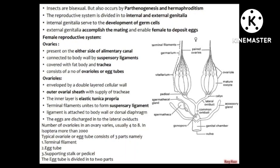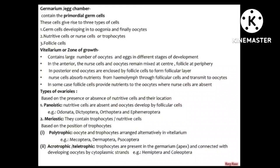The eggs are discharged into the lateral oviduct. The number of ovules in an ovary varies — usually 4 to 28, but in Isoptera more than 2000. A typical ovule or egg tube consists of three parts: first is the terminal filament, second is the egg tube, and third is the supporting stock or pedicel. The egg tube is divided into two parts.